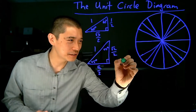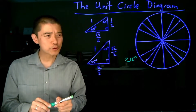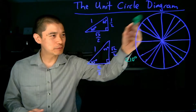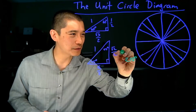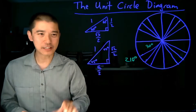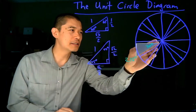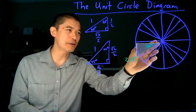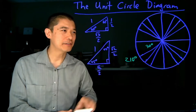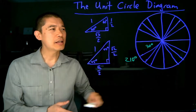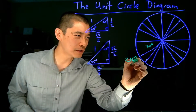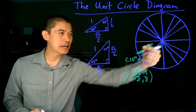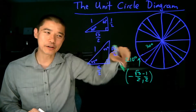Let's take the angle 210 degrees. What are the coordinates of that point? We first think about the reference angle. The reference angle for 210 degrees is 180 degrees plus 30 degrees more, so the reference angle is 30 degrees. That means we can take our 30-60-90 triangle, place the 30-degree angle over that position, and this tells us exactly the horizontal and vertical distances we must travel to get to that point: square root of 3 over 2 horizontally and 1 half downward. So the coordinates of this point are negative square root of 3 over 2, negative one half — negative because we're going in the negative x and negative y directions.